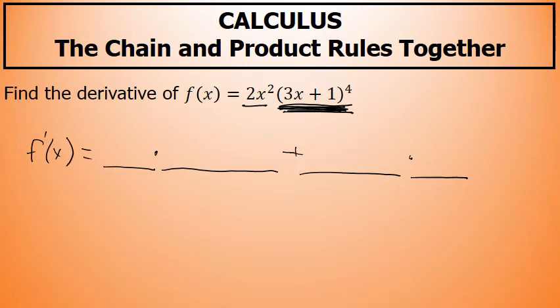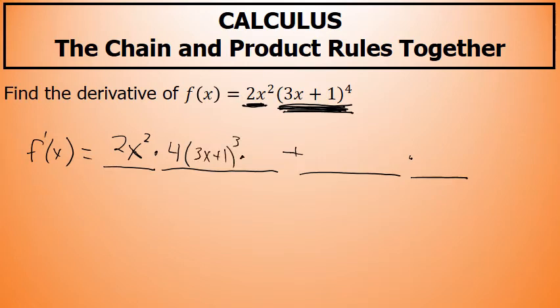The first factor of the first term is the first factor unchanged, so we have 2x squared unchanged times the derivative of the second factor — the derivative of 3x plus 1 to the fourth power. This is a quantity to a power, so we use the chain rule: bring the 4 to the front, times 3x plus 1 to the third power, then multiply by the derivative of 3x plus 1, which is 3.